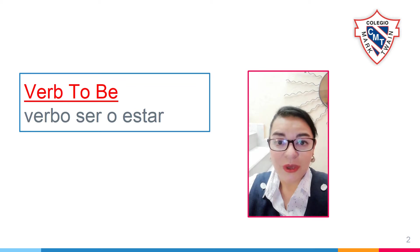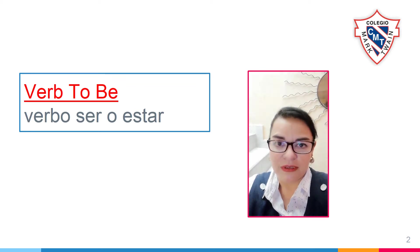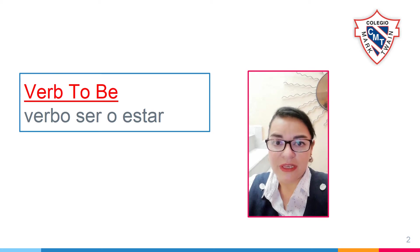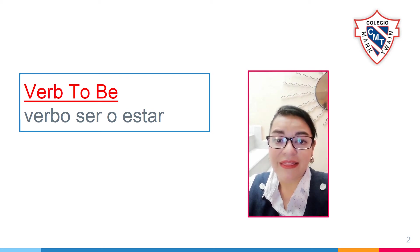Hi, kids. Today we are going to learn the verb to be — the simple verb to be, the constructions, the interrogative and the negative form. Pay attention.